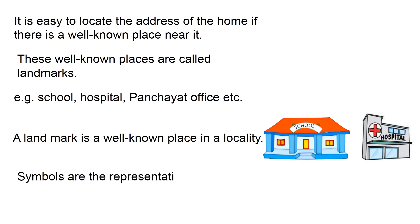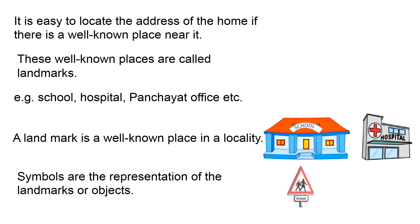Symbols are the representation of landmarks or objects. The symbol of a school is different from the actual landmark of a school. Similarly, the hospital symbol is different from the landmark of the hospital. So, a landmark is the place and a symbol is the representation of that landmark. Can you find the difference between a landmark and a symbol?